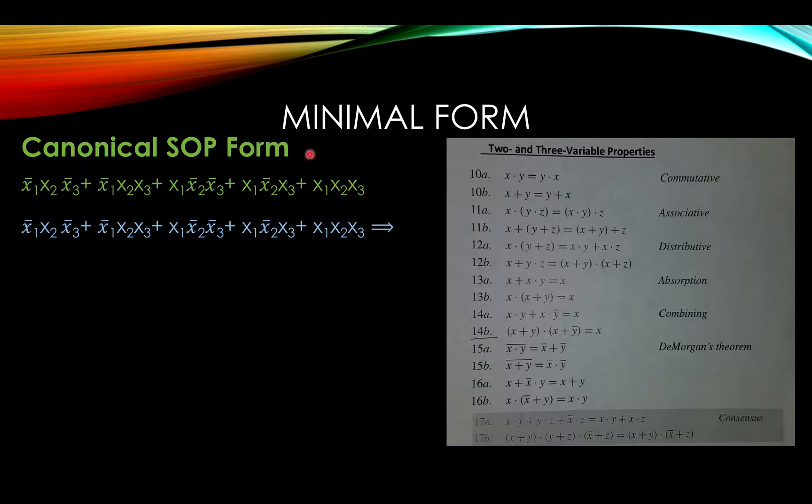Now, for the minimal form, we will use the canonical sum of products form and these properties to simplify. 12a is distributive property, and what happened here is that instead of distributing, we took out a variable. In this case, these two terms, we took out x1, and in these two terms, we took out not x1.